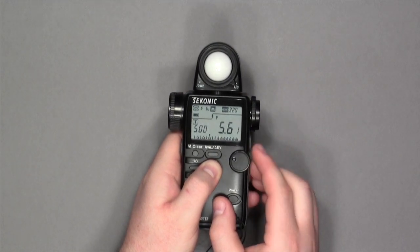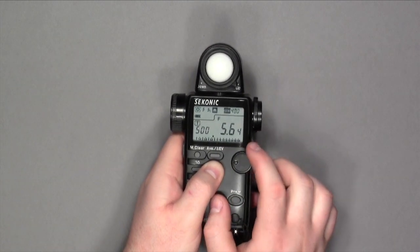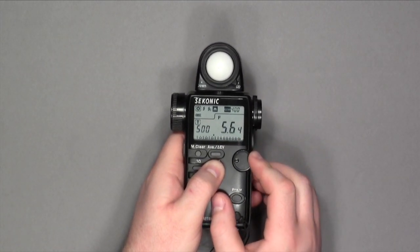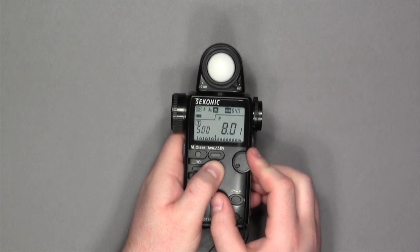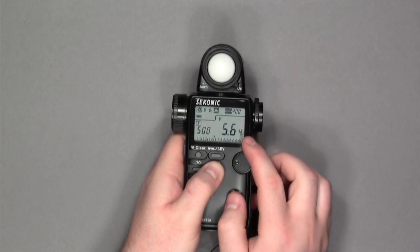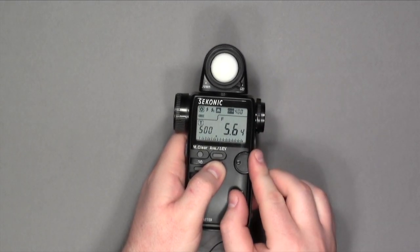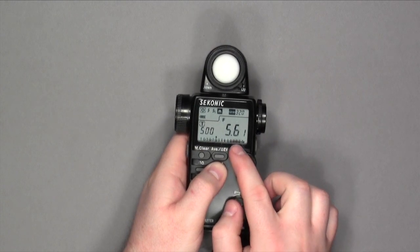As you can see, your ISO changes in third stops. So this number to 5.6, the tenth, is changing too. It's one-third of a stop. So if we went down one-third in your ISO, we're closer to 5.6.